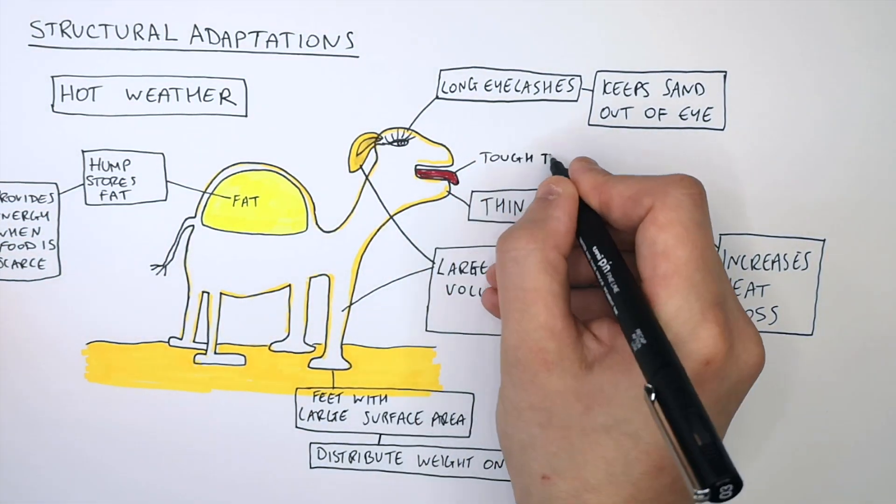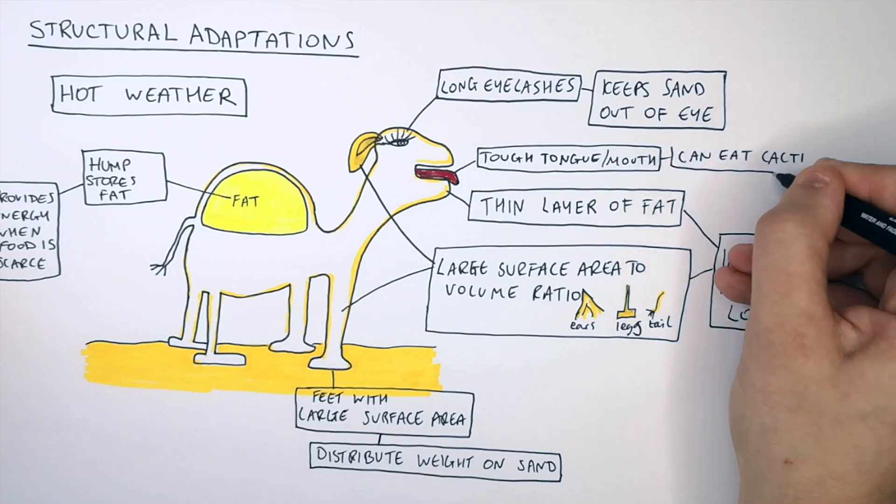Camels have a very tough tongue and mouth. This means that they can eat cacti.